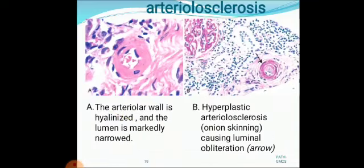The high-power view shows the junction of the fibrous cap and core with scattered inflammatory cells, calcification, and neovascularization, shown by the arrow. Regarding arteriolosclerosis, there are two types: hyaline arteriolosclerosis and hyperplastic arteriolosclerosis. In figure A, hyaline arteriolosclerosis shows a hyalinized arterial wall with the lumen markedly narrowed. Figure B shows hyperplastic arteriolosclerosis, which shows onion-skinning causing lumen obliteration, due to hyperplasia of smooth muscle cells of the vessel wall.